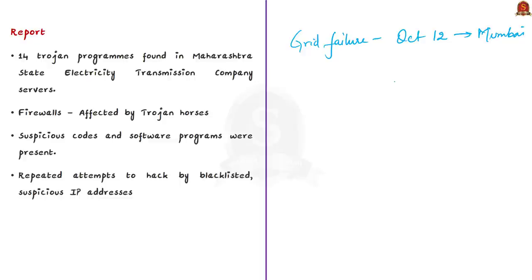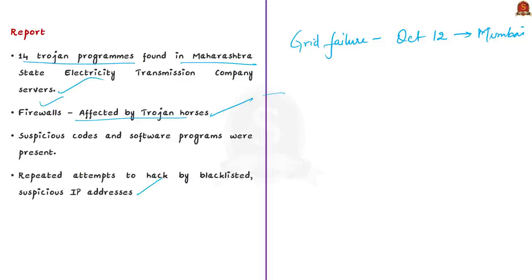The report noted that 14 Trojan programs were found to have entered the Maharashtra State Electricity Transmission Company's servers. The report observed that the firewalls of the Information Technology and Operational Technology servers — which play an important role in power transmission — were affected by these Trojan horses. A firewall is a software or hardware used to keep a network secure. The report also found suspicious codes and software programs affecting the cybersecurity ecosystem, and noted repeated attempts from blacklisted and suspicious IP addresses to log into the servers for hacking and disrupting the system. The major power outage was thus caused by Trojan horses.